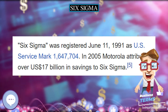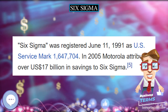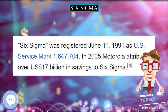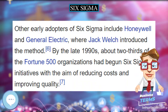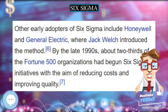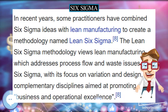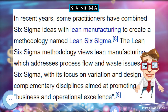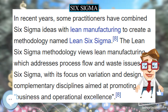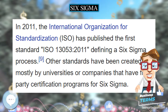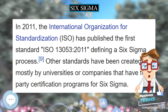Each Six Sigma project carried out within an organization follows a defined sequence of steps and has specific value targets — for example, reduce process cycle time, reduce pollution, reduce costs, increase customer satisfaction, and increase profits.